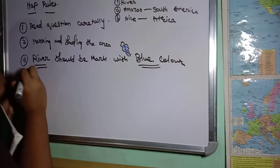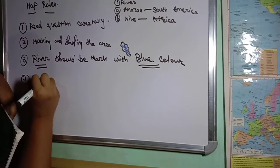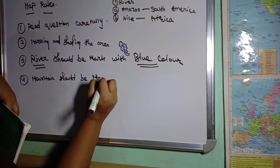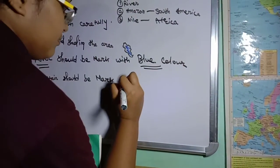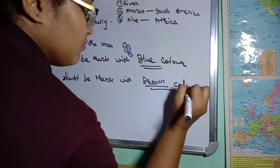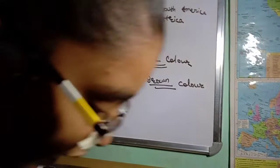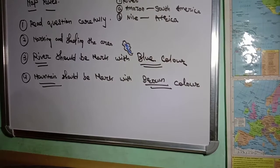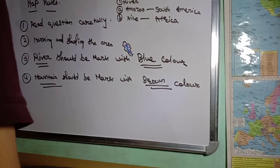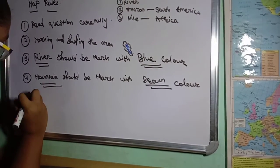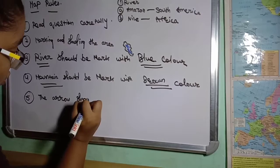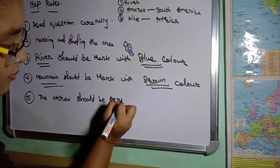Third rule: rivers should be marked with blue color — this is important. Mountains should be marked with brown color. So it is important to know which color applies to what. River = blue, mountain = brown.